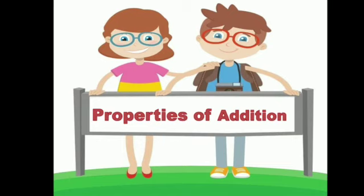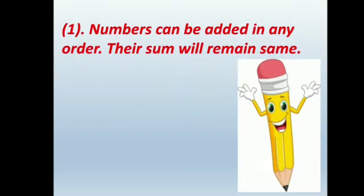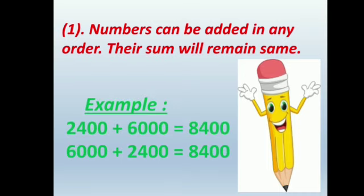Now, we are going to study properties of addition. Property 1: Numbers can be added in any order; their sum will remain the same. For example, 2400 plus 6000 equals 8400, and 6000 plus 2400 also equals 8400. This means if we change the order of the numbers, the sum remains the same.